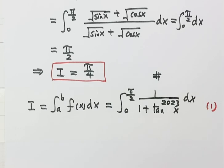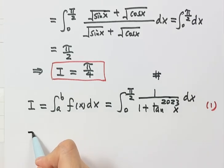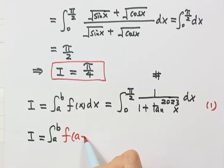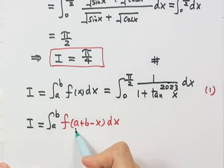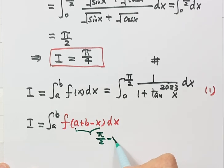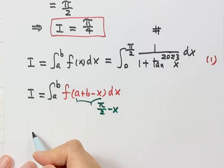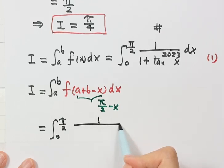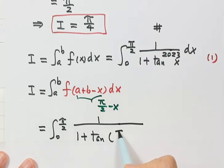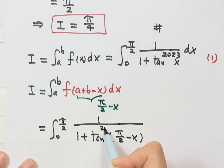Applying the King Property with a = 0 and b = π/2, we replace x with π/2 − x. The integral becomes the integral from zero to π/2 of 1/(1 + tan^2023(π/2 − x)) dx.